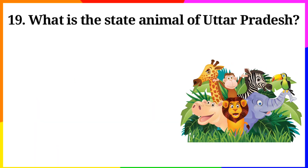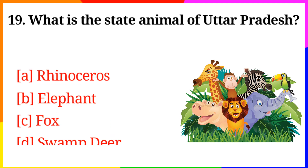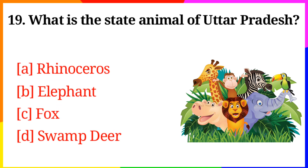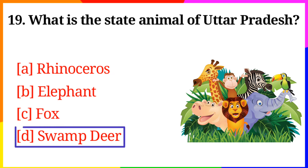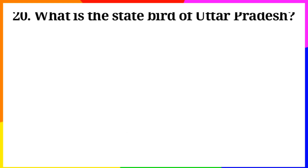Question No. 19: What is the state animal of Uttar Pradesh? Option A: Rhinoceros, B: Elephant, C: Fox, D: Swamp Deer. Answer is Option D: Swamp Deer.